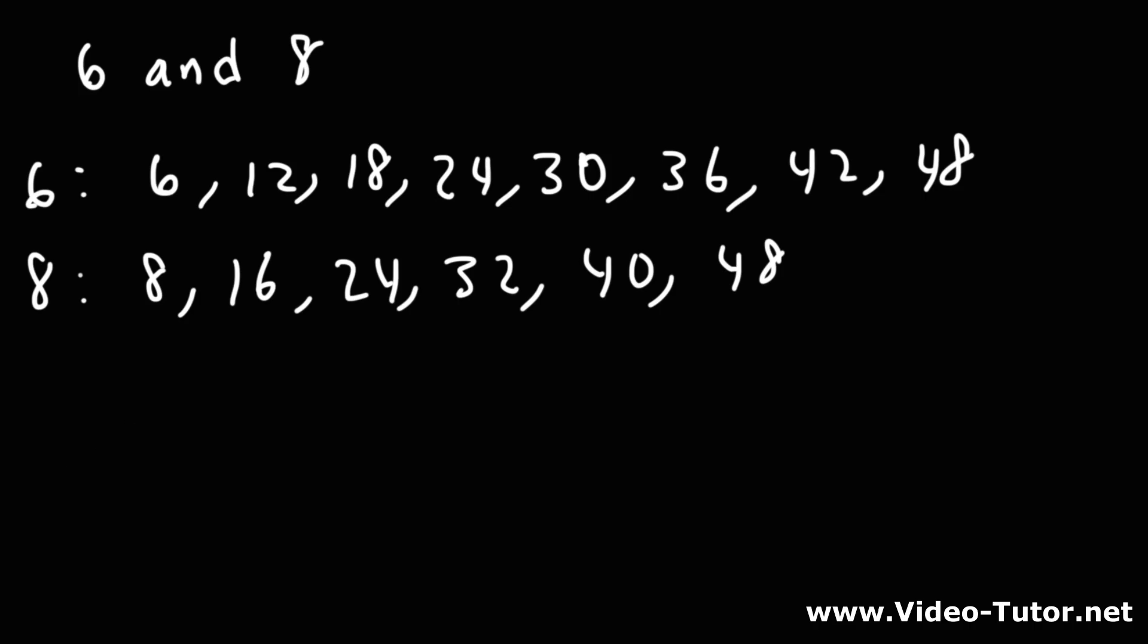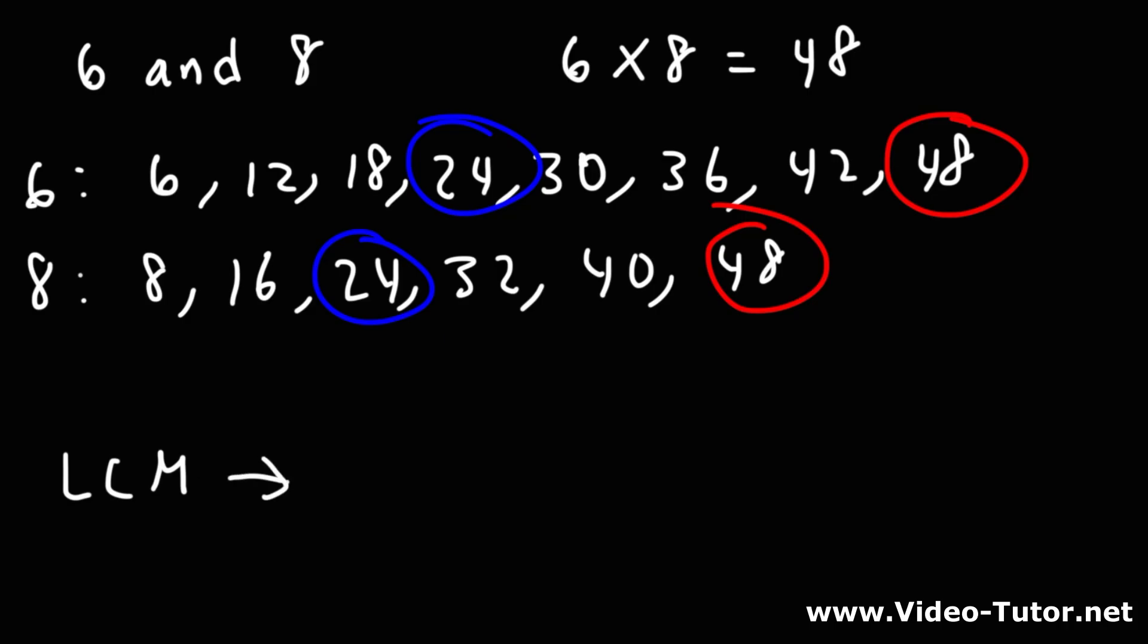So we could see that 48 is definitely a common multiple of 6 and 8, and 6 times 8 is 48. But that doesn't guarantee that it's the least common multiple. Because notice that 24 is also a common multiple of 6 and 8, and it's lower than 48. And that's the answer. The LCM of 6 and 8 is 24.